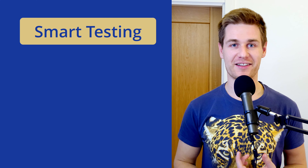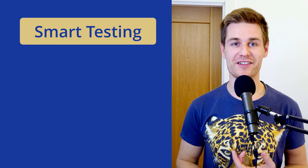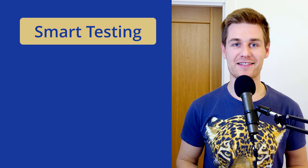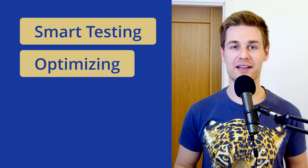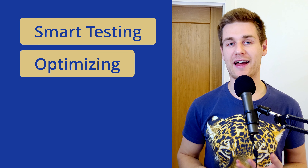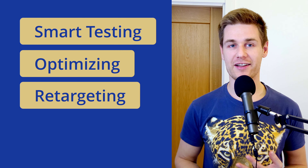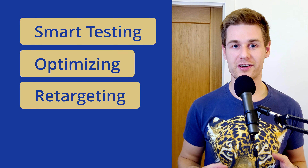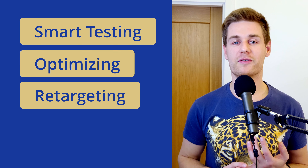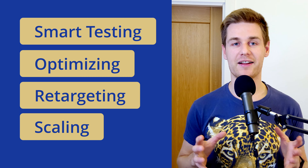This strategy consists of four parts. First is smart testing, where we test interests and ads. Second is optimizing. Third, we add retargeting on our warm audiences. And number four is scaling.